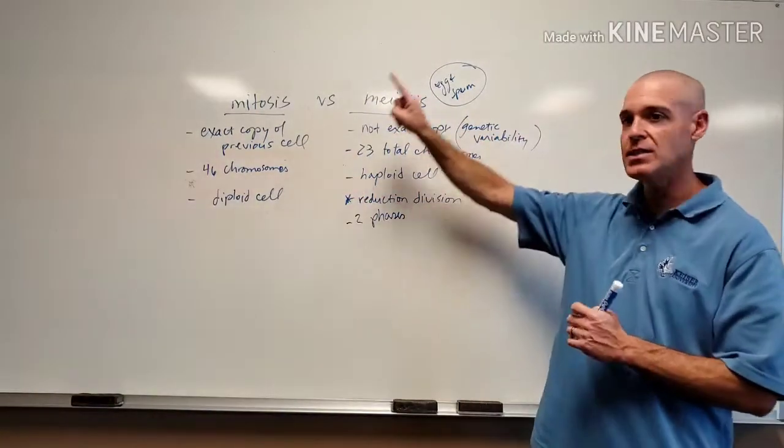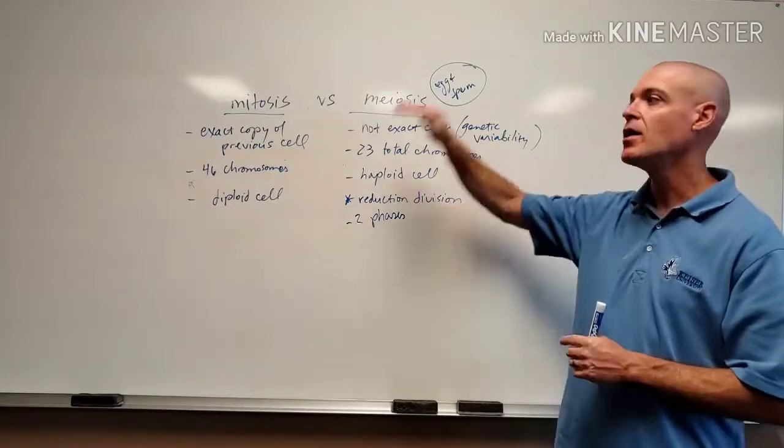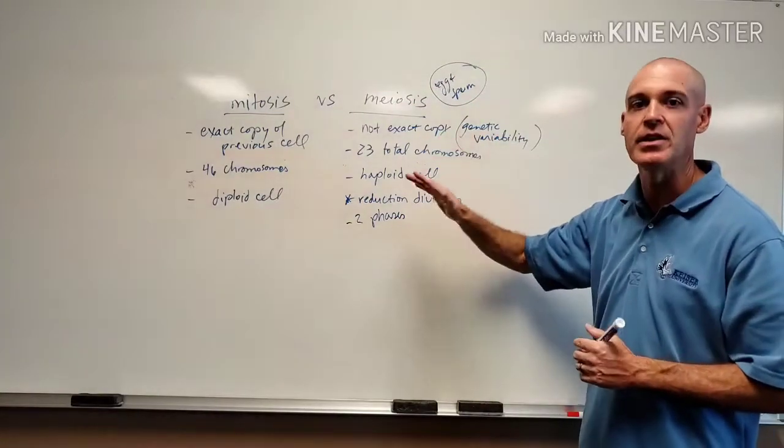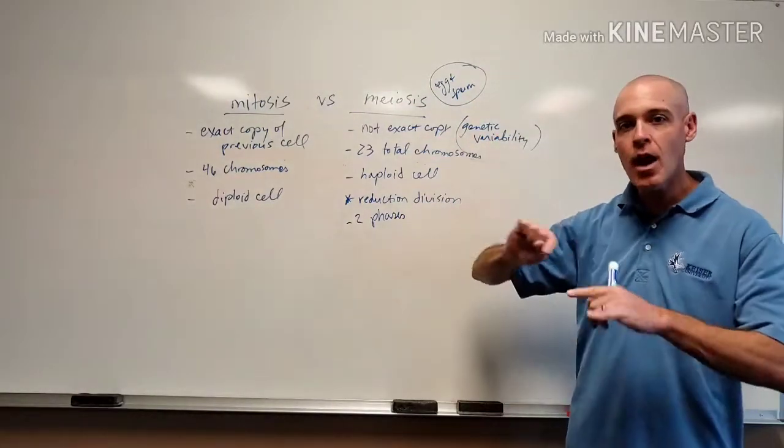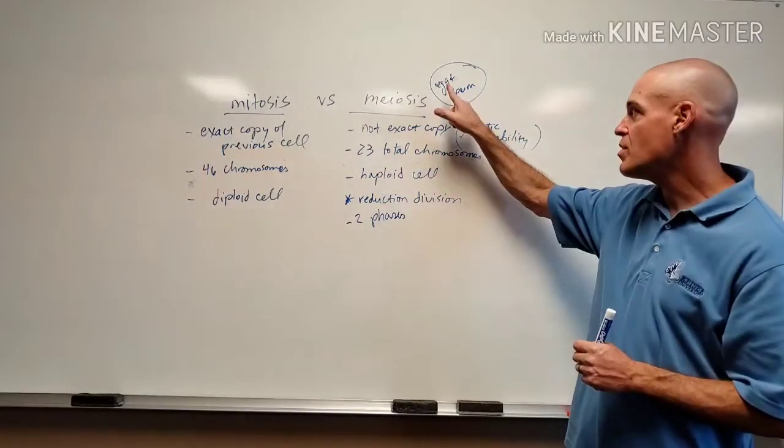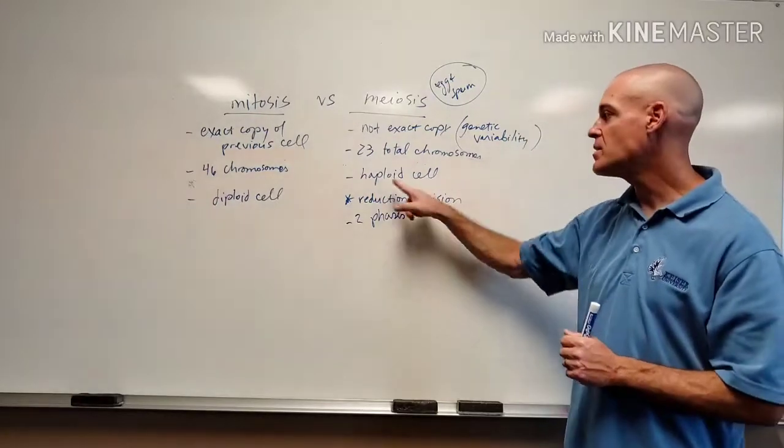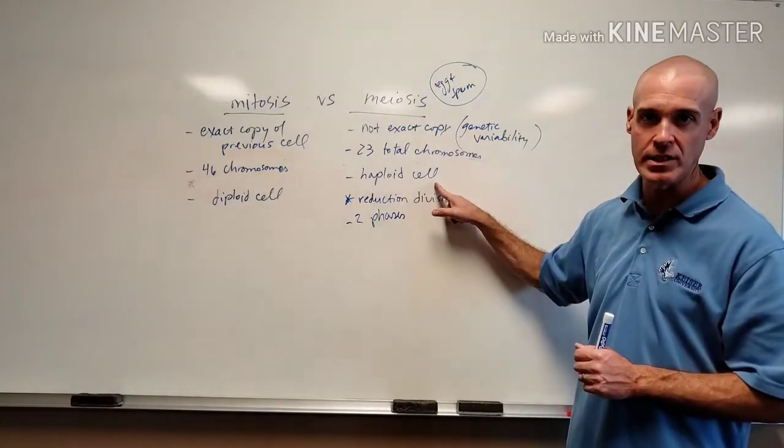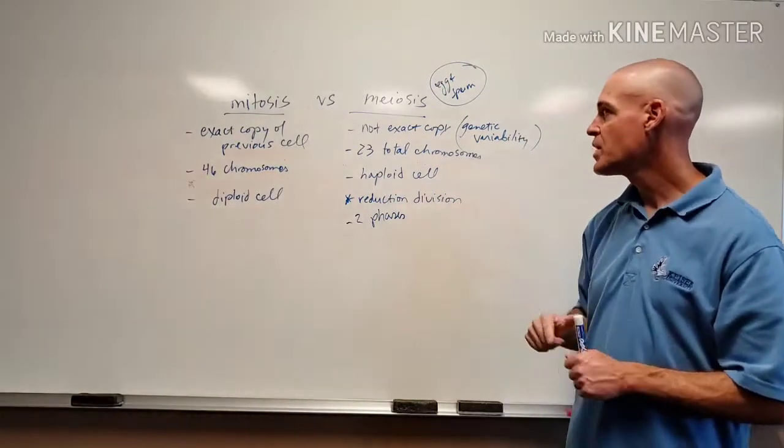But meiosis is going to go through a first phase, starting with 46 chromosomes, then go through a second phase of the same thing, prophase, metaphase, anaphase, telophase, cytokinesis, winding up when it's all said and done with 23 total chromosomes in the egg and in the sperm. That makes it referred to as a haploid cell.